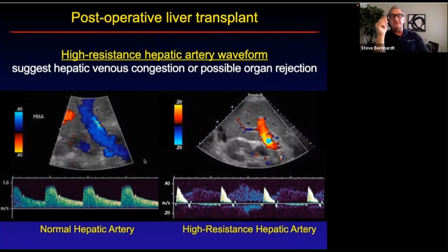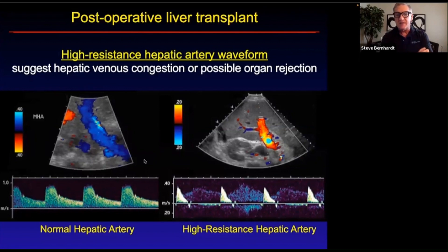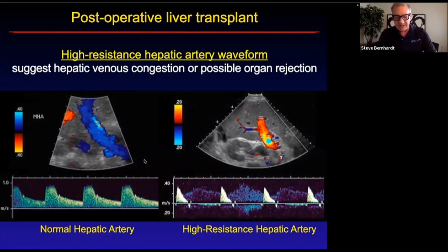The post-operative liver transplant complications — one is that the day after you look at a transplant, you can have high resistance of the artery. This high resistance of the hepatic artery is a very common thing. If you look at it in the literature, there's not much ominous about it. There was a question on the boards which I did not like — it may still be on the boards — and it said that if you find a highly resistive hepatic artery post-surgery, it suggests venous congestion or possible organ rejection.